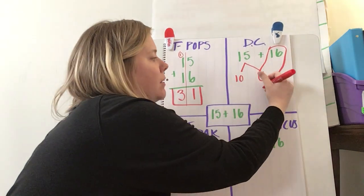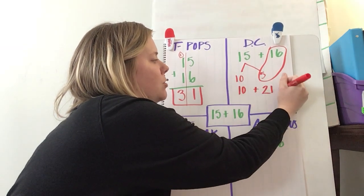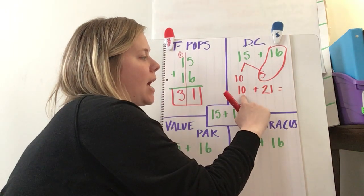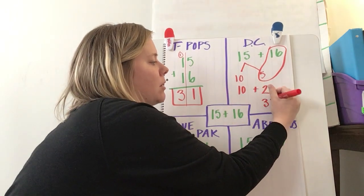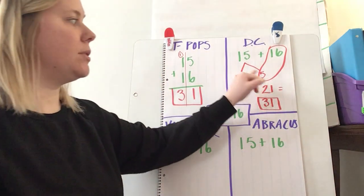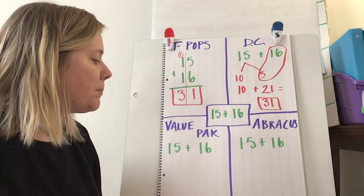Now I'm going to compose it back together. 16 plus 5 equals 21, and I bring down my 10. So my new addition sentence that's a friendly number to add, 10 plus 21 equals 31. So decompose and then compose it back together. Change those numbers to get to a friendly number.